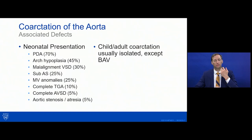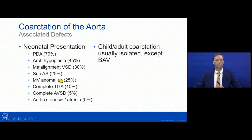Subaortic stenosis, aortic stenosis or atresia, and more complex abnormalities such as transposition or complete AV canal can be associated. When you have a constellation of left heart obstructive lesions, that's what we call Shone's complex. When coarctation shows up in an older child or adult, it typically is isolated, often presenting with just an incidental finding or a bicuspid aortic valve.